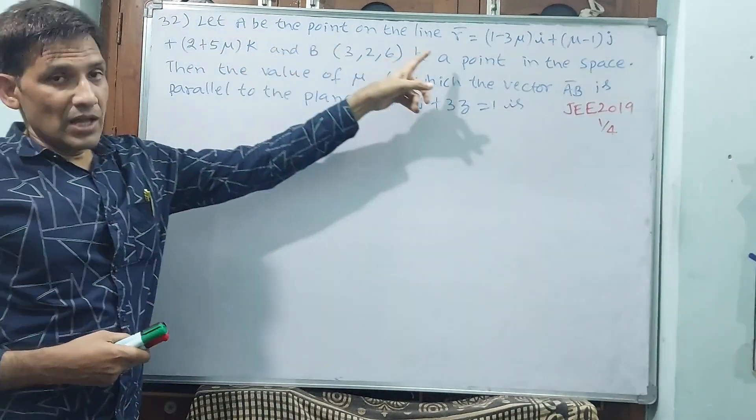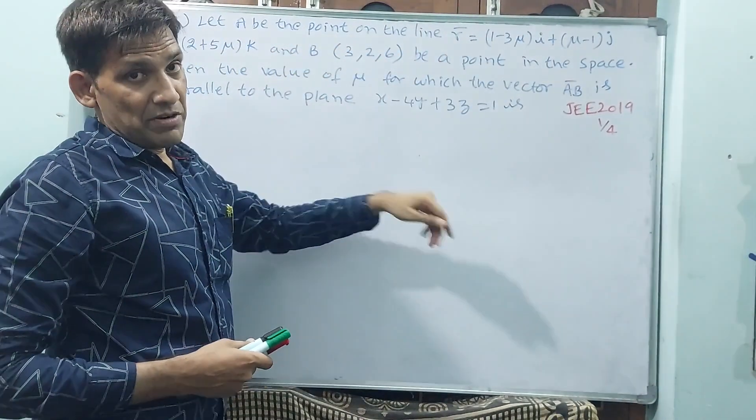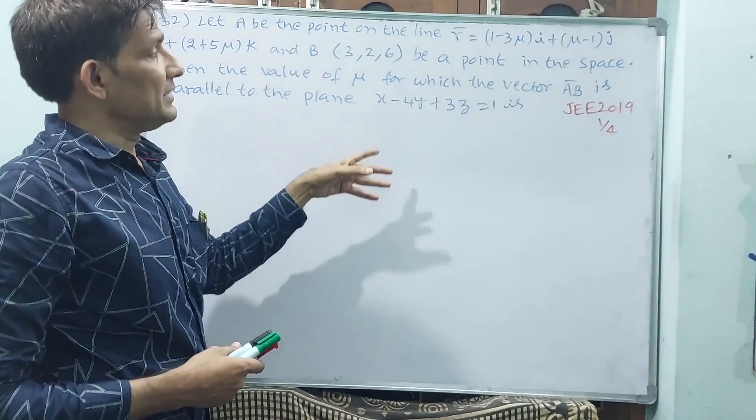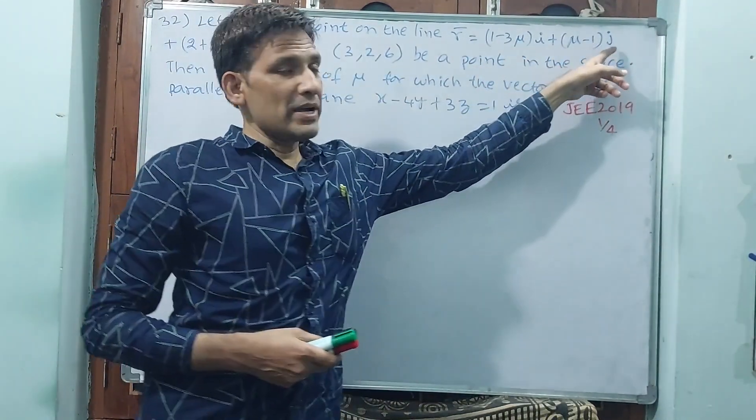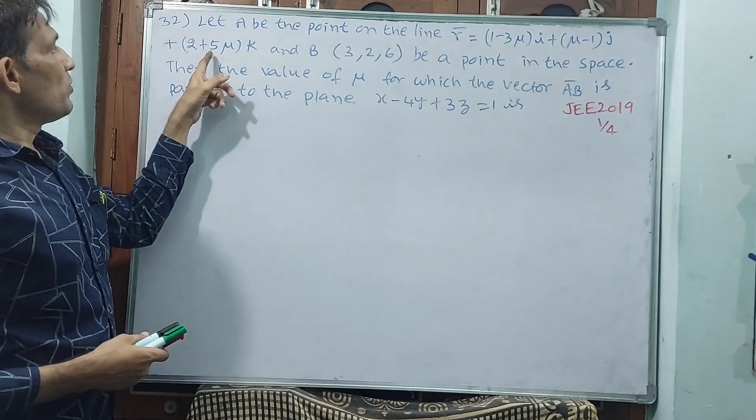Let A be the point on the line. See this is a vector equation, a little bit tearful but we will deal with this. Vector r is (1 minus 3μ)i plus (μ minus 1)j plus (2 plus 5μ)k.